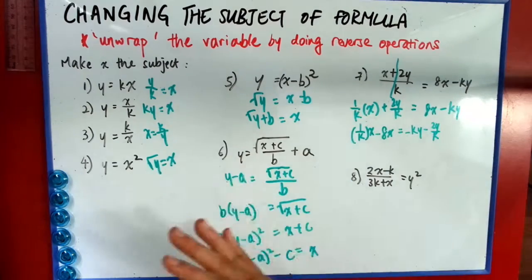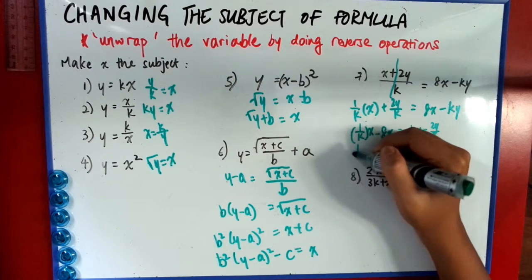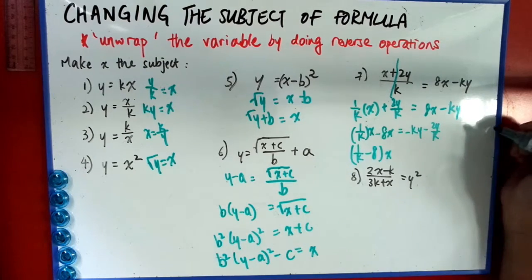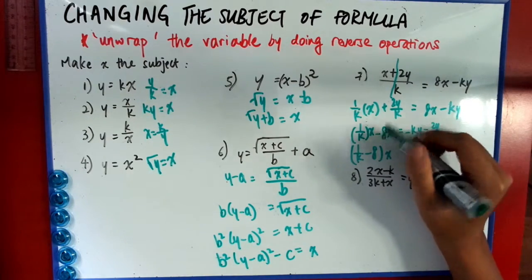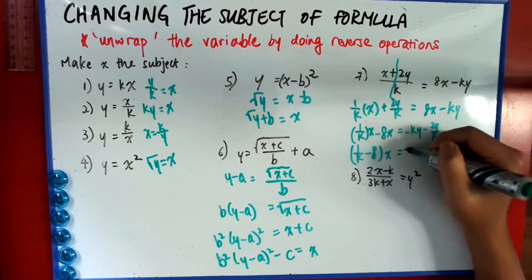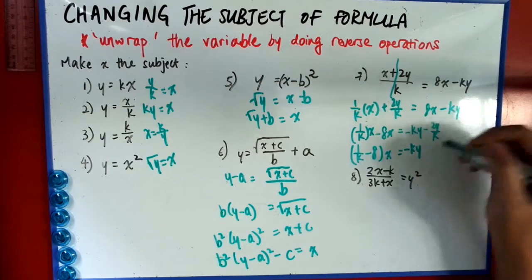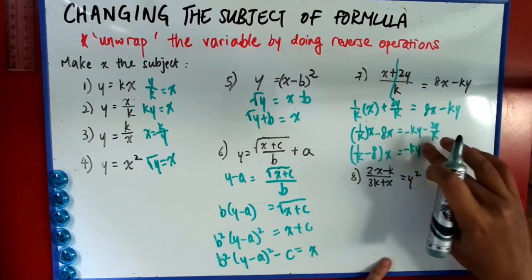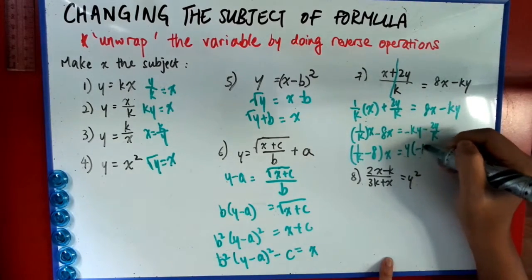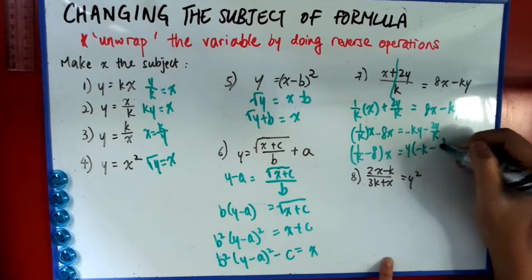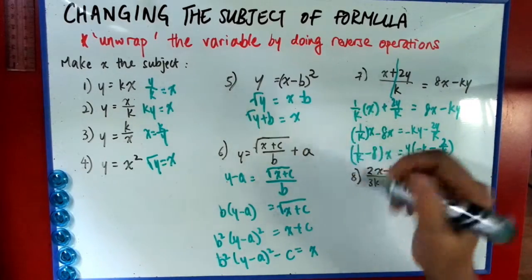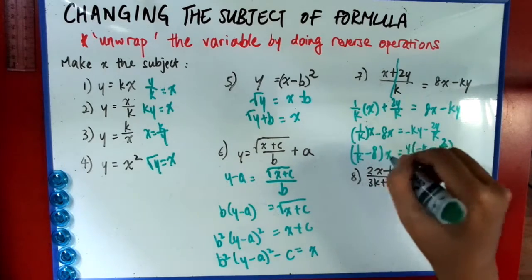Then I just have to factorize out x. So it's 1 over k minus 8x. So you just have to factorize out x. This one, you don't have to worry. Minus ky. Or even you can factorize out y. Let's just do that in case. y minus k minus 2 over k. So this is the very last step. You just have to divide by the coefficient of x.